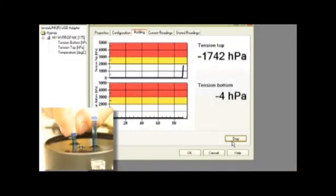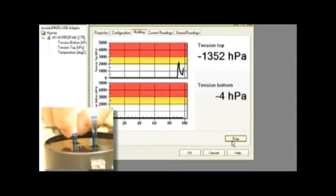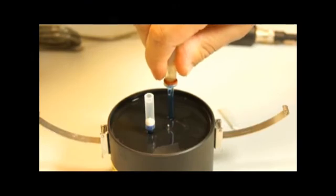Slowly and smoothly start screwing the tensiometer into the port. Once the rubber gasket touches the base, slow down and watch the screen to make sure the pressure stays under 2000 hectopascals. Now cap the tensiometers to keep them from drying out.